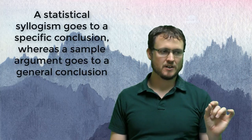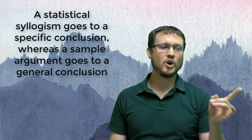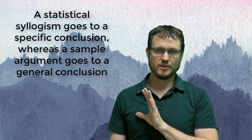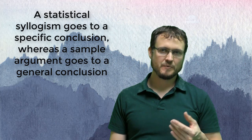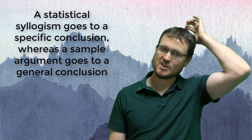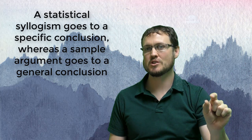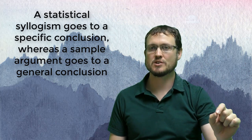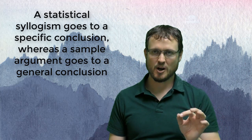Statistical syllogisms are pretty straightforward. The tricky part is distinguishing a syllogism from a sample argument. A syllogism goes to a specific conclusion — the conclusion is about one Toyota, not most Toyotas. In a sample argument, it goes to a more general conclusion — it would refer to most Toyotas. So a statistical syllogism goes to a specific probable conclusion, whereas a sample argument goes to a general but probable conclusion.